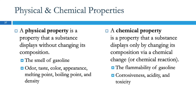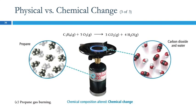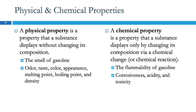Chemical properties — when that property is displayed or demonstrated, it involves a chemical reaction and the original substance is destroyed. For example, flammability: if you demonstrate how gasoline is flammable, you don't have gasoline anymore because a chemical reaction occurred. Chemical properties are really descriptions of chemical reactions. Corrosiveness, acidity, and toxicity are some other examples of chemical properties.